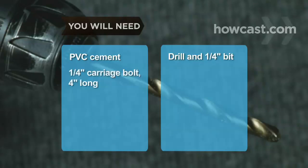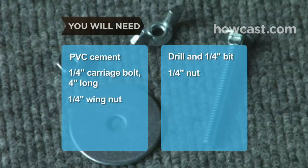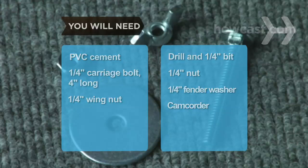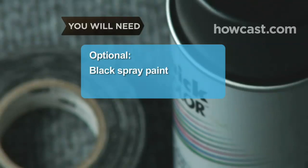a drill with a 1/4-inch bit, a 1/4-inch carriage bolt about 4 inches long, a 1/4-inch nut, a 1/4-inch wing nut, a 1/4-inch fender washer, and a camcorder. Optional: black spray paint and grip tape.